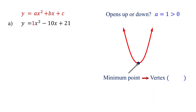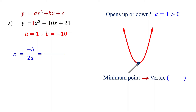First, find its x-coordinate using the formula x equals negative b over 2a. In our function, a is 1 and b is negative 10. Substitute these values into the formula. Simplifying this, we find that x equals 5. So the x-coordinate of the vertex is 5.